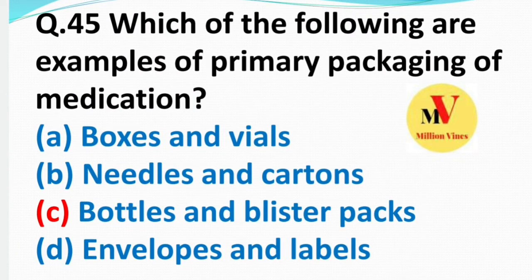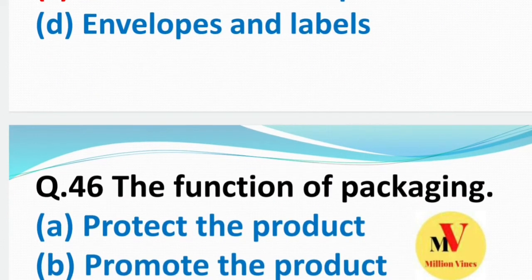Next: Which of the following is an example of primary packaging of medication? Iska right answer rahega aapka C — bottle and blister packaging.